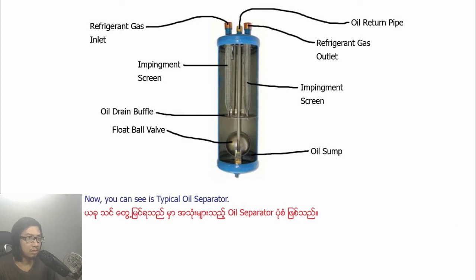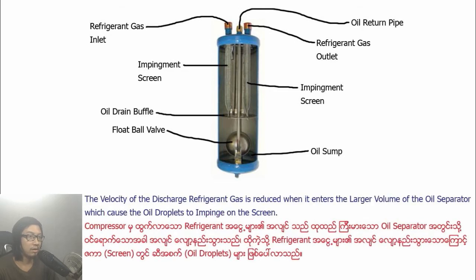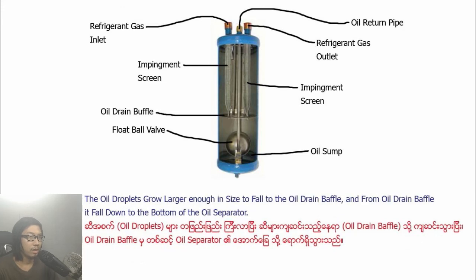Now you can see a typical oil separator. It is an impingement type oil separator. Screens in the upper half cause small particles of oil to collect and form larger ones. The velocity of the discharge refrigerant gas is reduced when it enters the larger volume of the oil separator, which causes the oil droplets to impact on the screen. The oil droplets coalesce on the inside and fall to the oil drain buffer, and from the oil drain buffer it falls down to the bottom of the oil separator.